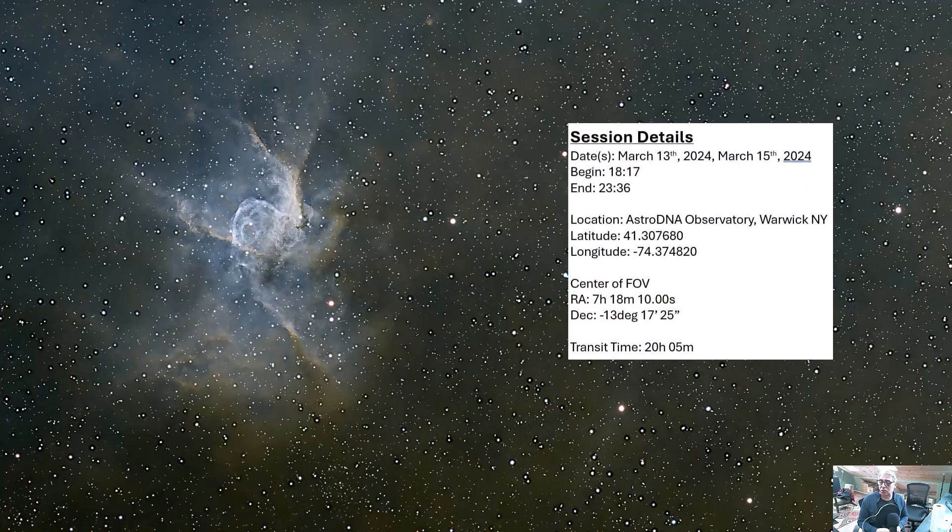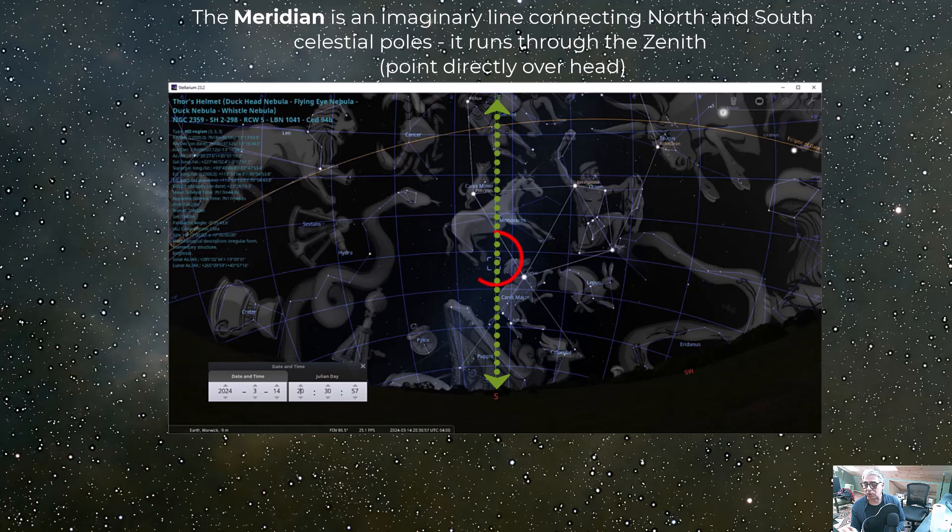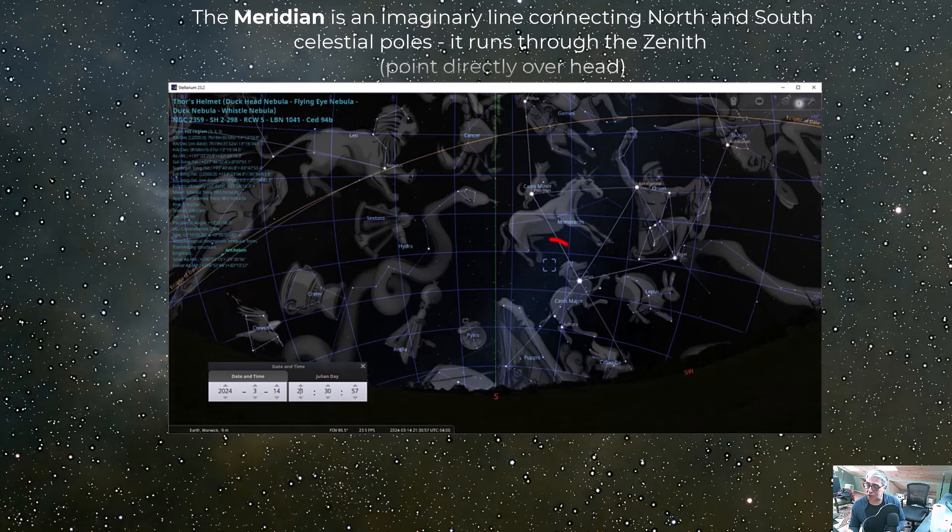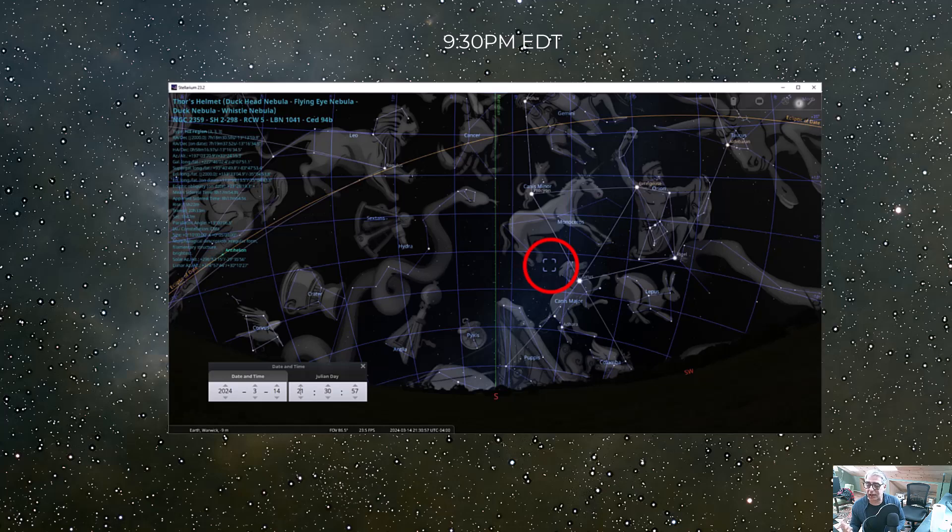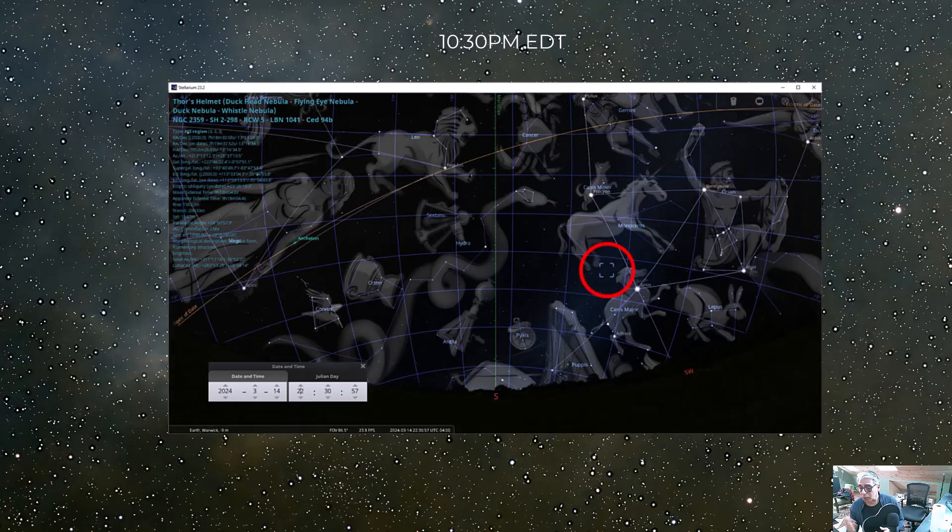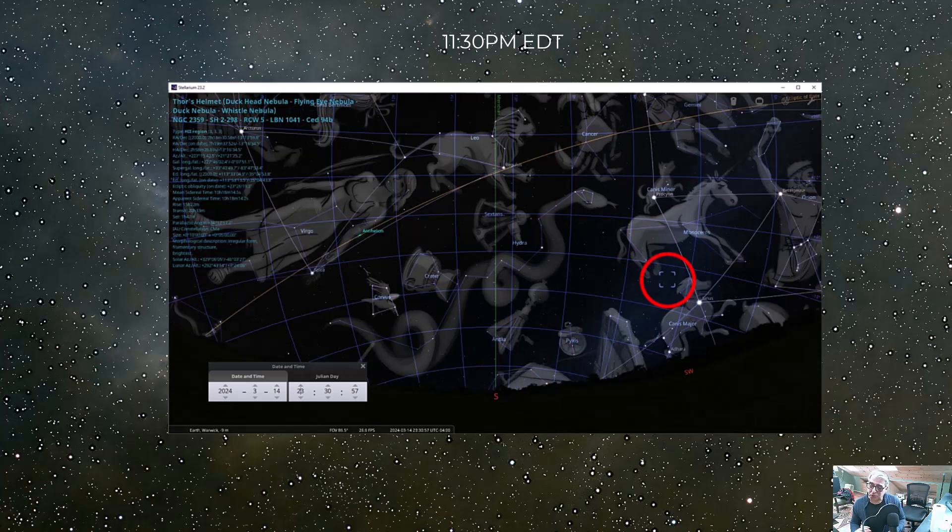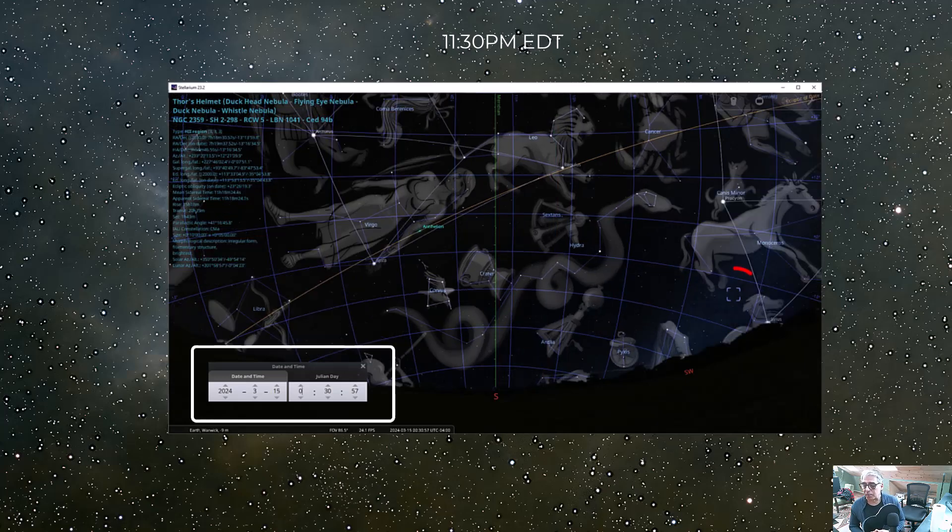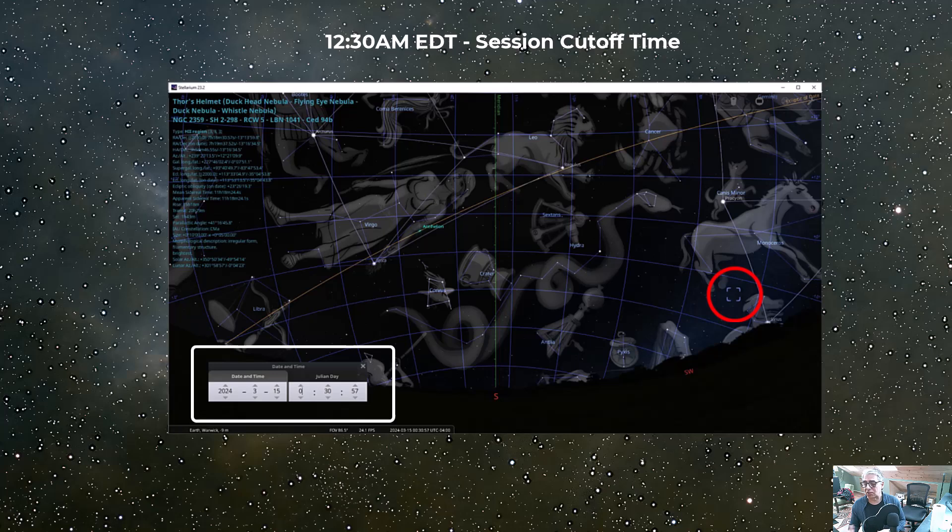So I shot this image late in the winter season. I shot it in March, March 13th through the 15th, and that means that I could begin shooting it around 8:15 p.m., about the time that it crosses the meridian. And you can run your session until about midnight, 12:30. Again, I'm in a New York latitude, 41 degrees. So around 12:30 a.m. is the cutoff before this thing descends and sets into the west.